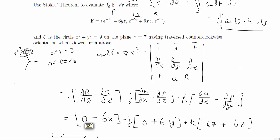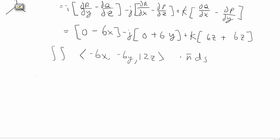We can already imagine the normal vector will have just a z component, because the circle is flat. We're told it goes counterclockwise, so using the right-hand rule, we should expect a normal vector that goes straight up — there's no angle to this curve or surface. To calculate the normal vector, we want to rewrite the curve as a surface. Because it's a circle, we switch to polar coordinates, then take a cross product to find the normal vector using the formula for two vectors in the plane.